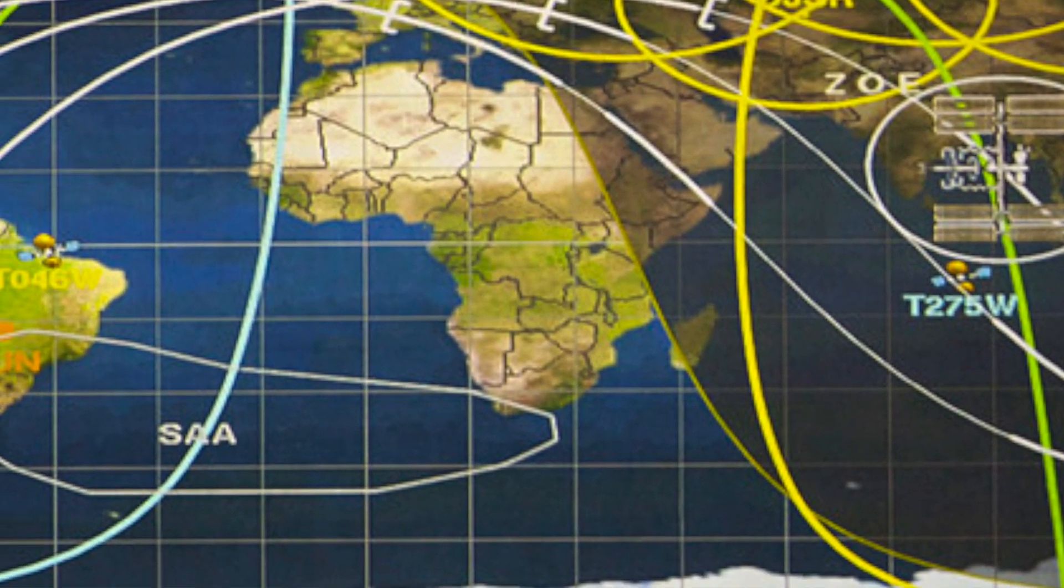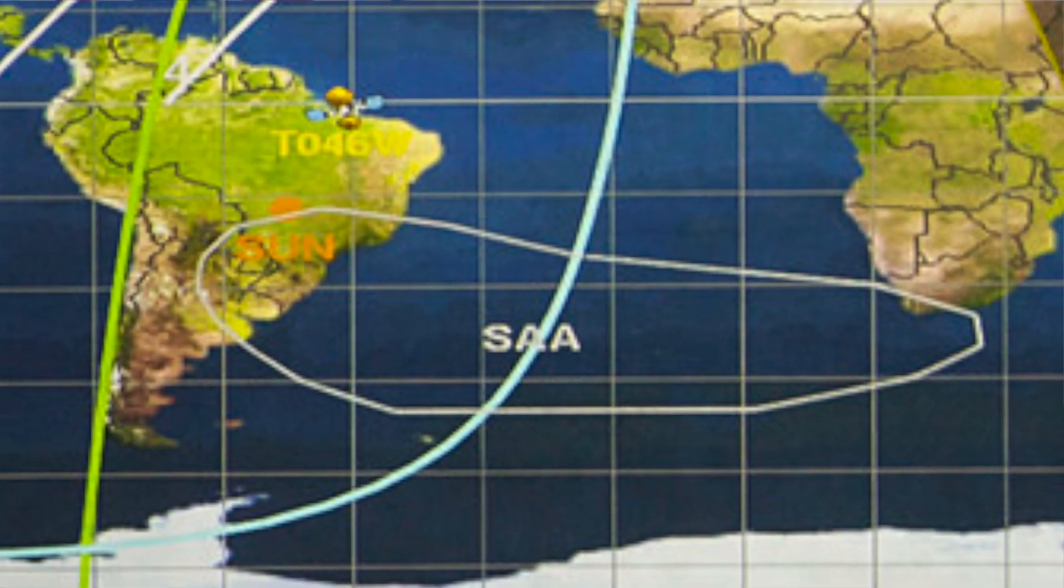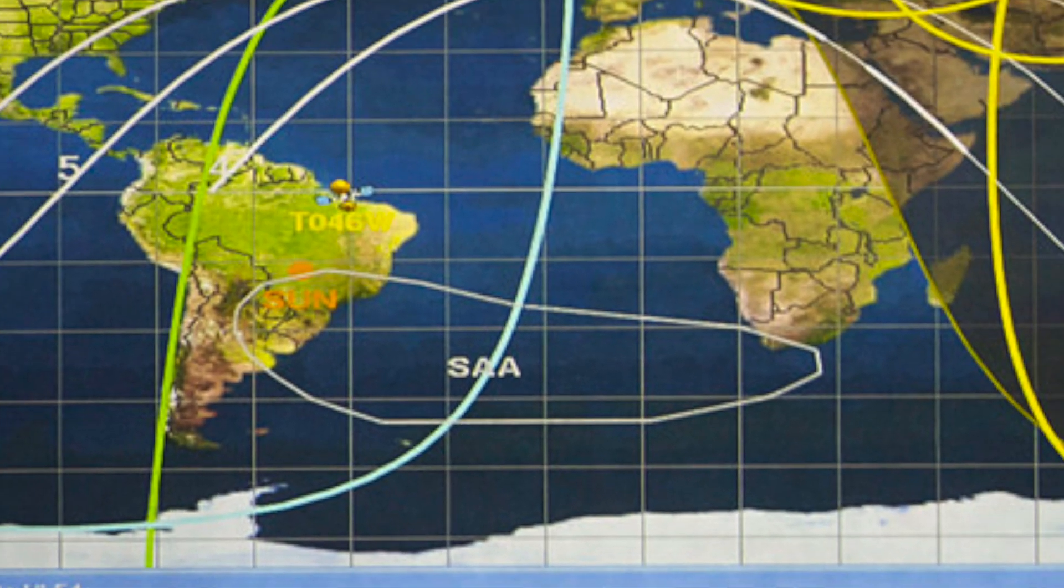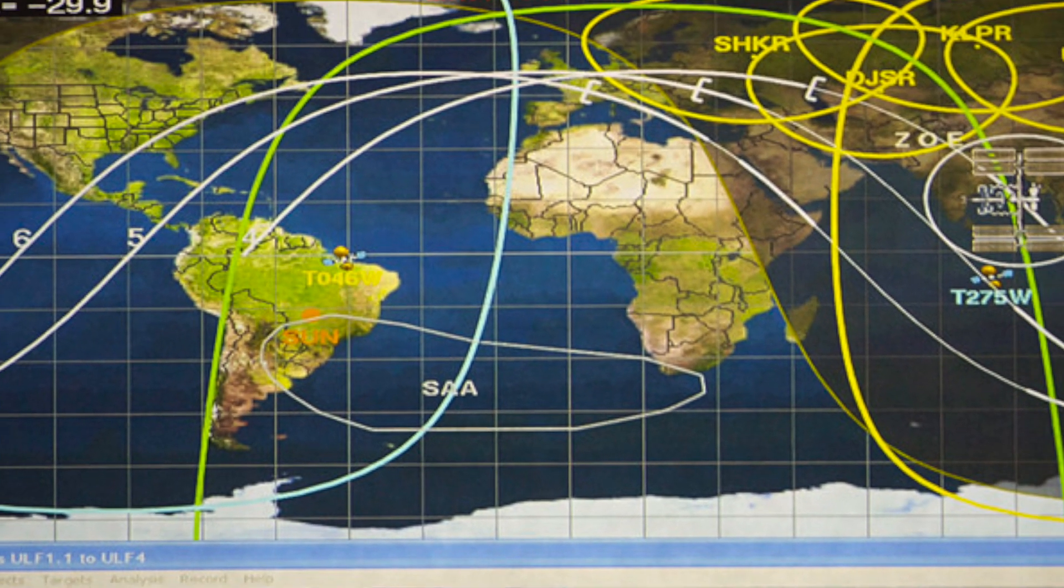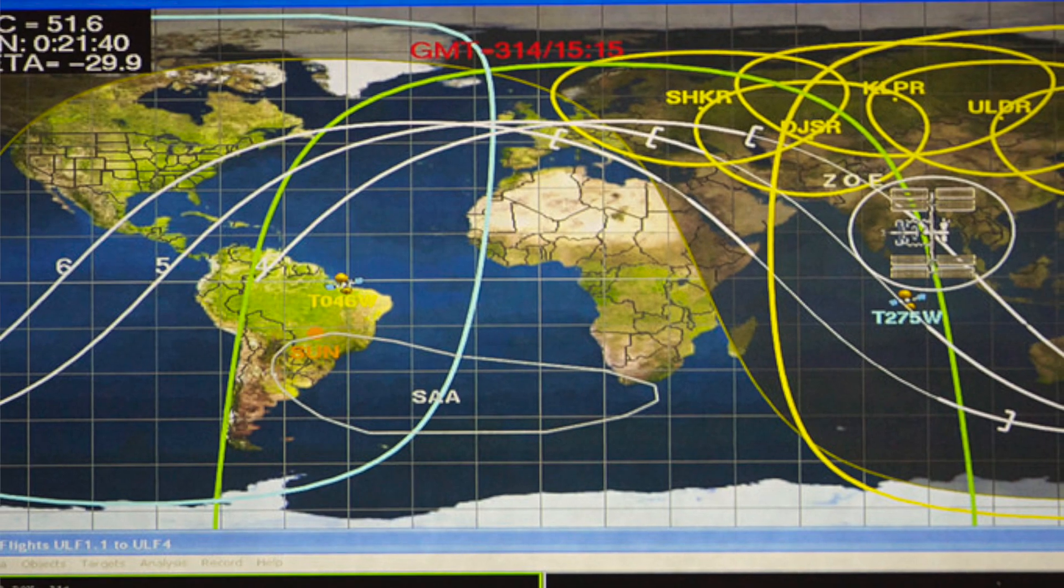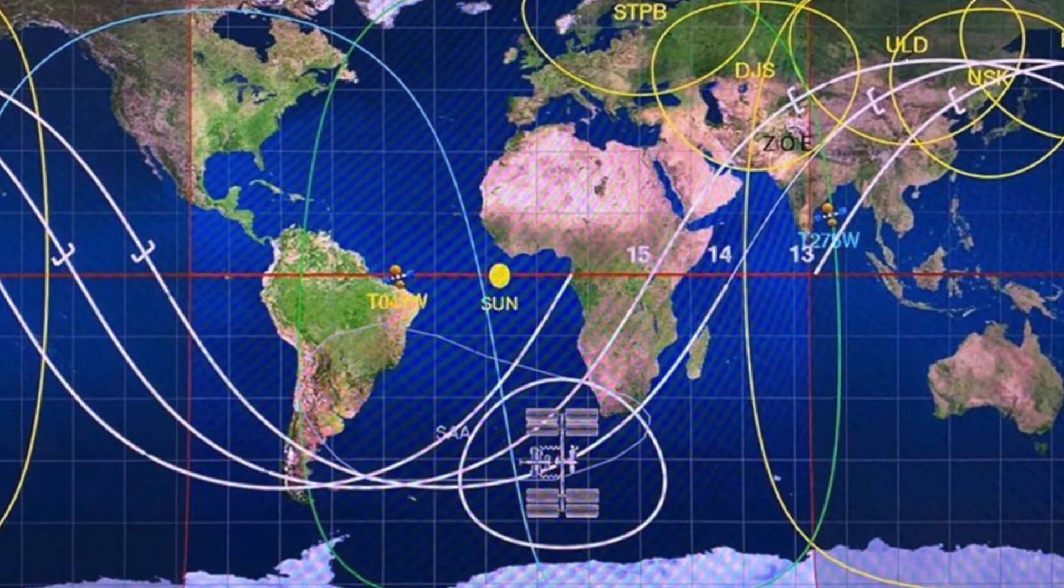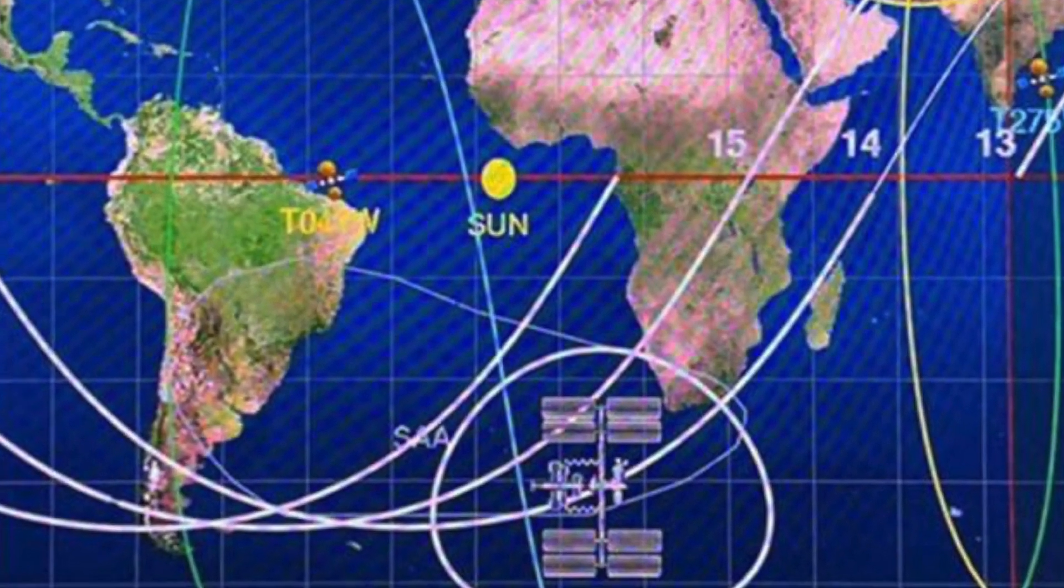SAA stands for South Atlantic Anomaly. Whenever the ISS is flying over that area, their computers have been known to crash, or return bit errors, or just glitch. Not fully sure why, but if at any time something goes wrong, one of the questions is, hey, are we orbiting over that area of the Atlantic? There's also labels for sun and no sun, depending on whatever objects use solar power for their purposes.